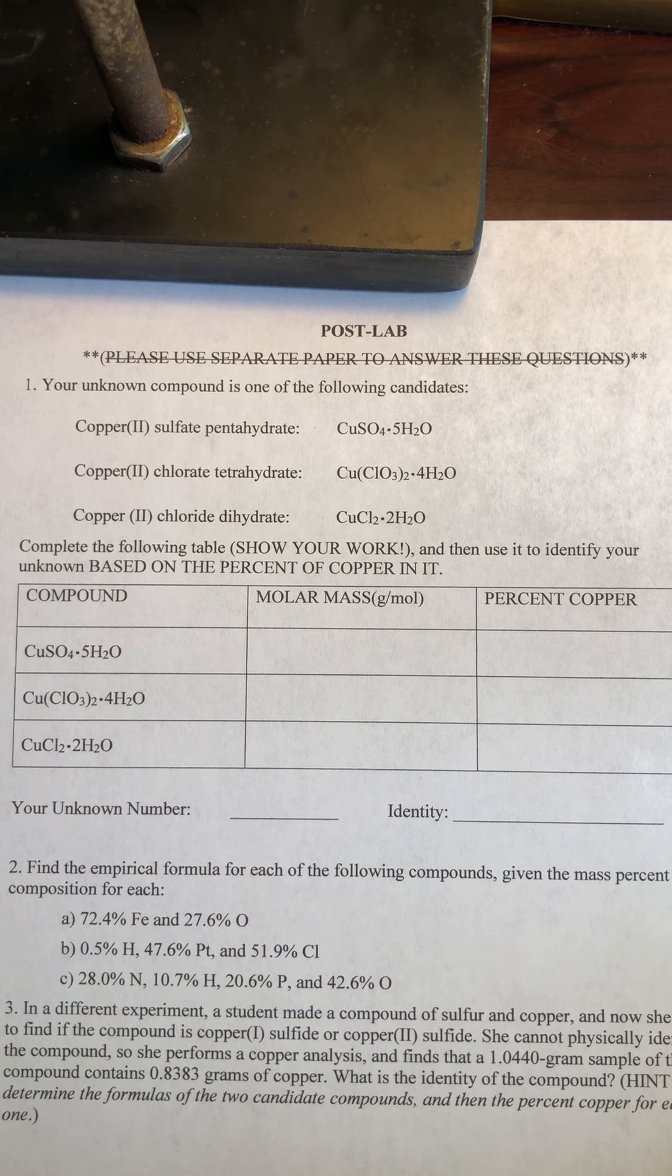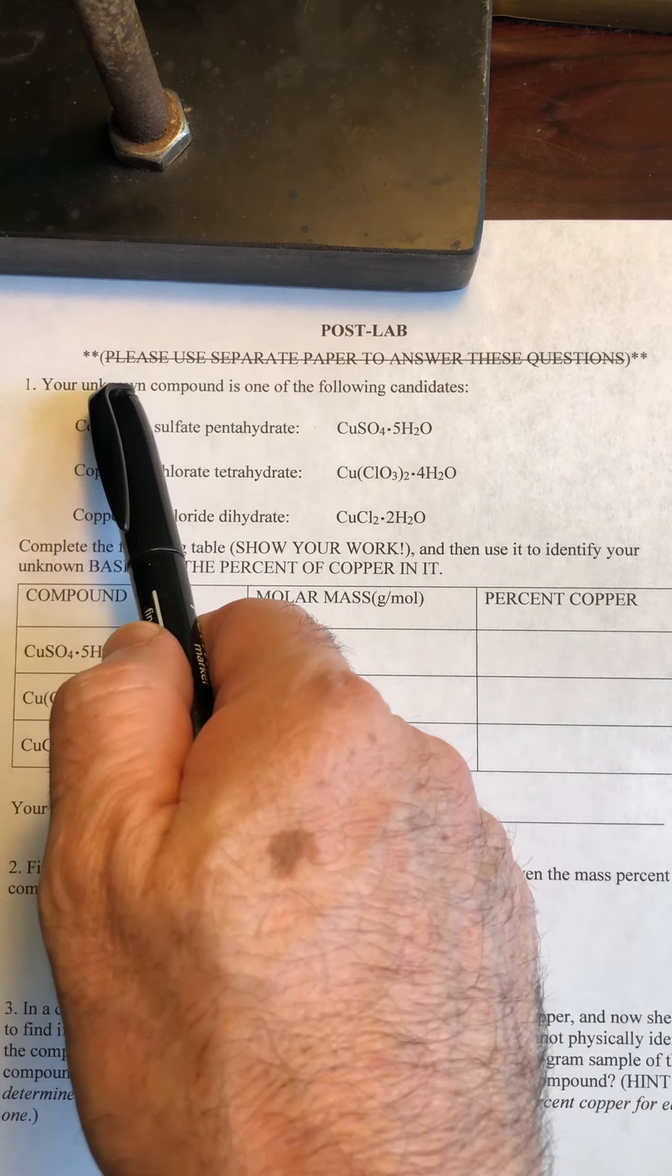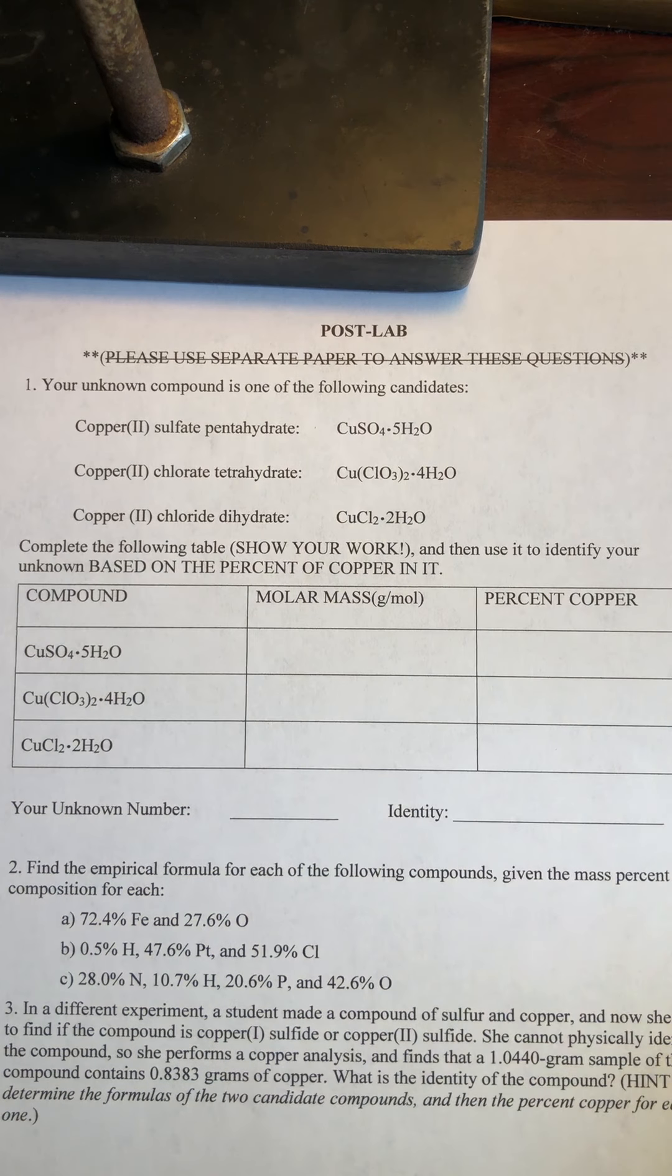Okay, now that you have determined the percent of copper in your unknown, it's time to see which one it is. If you go to page four of your handout, this is your post lab section. And you'll receive a doc file, so it's okay to write in your answers using the actual document file. That's why I crossed out this section here that said that we should have used separate paper.